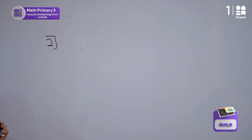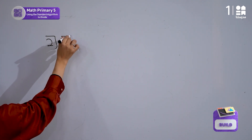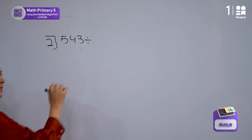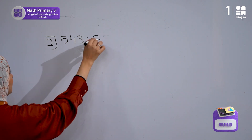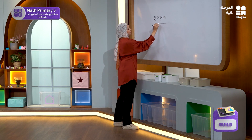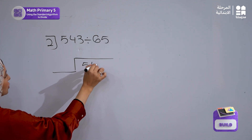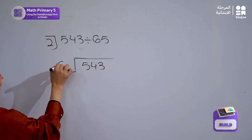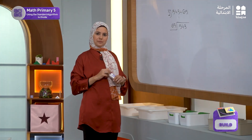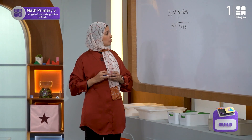We were asked to divide these two numbers: 543 by 65. Now let's write it in the standard algorithm form. I will write the 543 here and the 65 here.